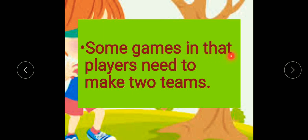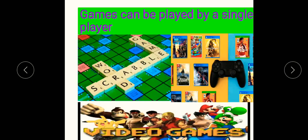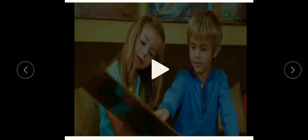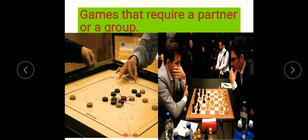Next, we'll see some games in which players need to make two teams. Games that can be played by a single player include Scrabble and Video Games. Games that require a partner or a group include Chess — where two players play — and Carom, where two or four players can form a group.